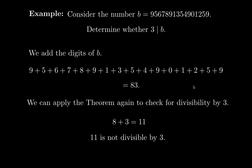I didn't go over the proof of the criterion — why 3 divides B is equivalent to the sum of digits being divisible by 3. That is a theorem I'll prove later when we have the tools to do so. For now, let's just look at the examples. The conclusion is that 3 does not divide that number.